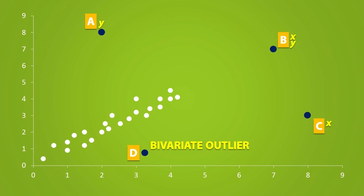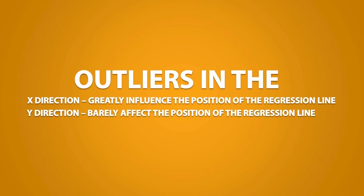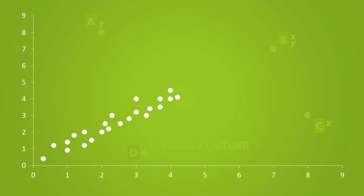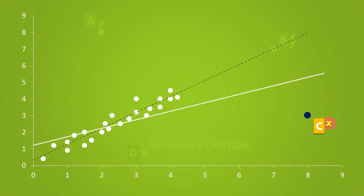The presence of outliers usually has an effect on the position of a regression line. Outliers in the X direction greatly influence the position of the regression line, whereas outliers in the Y direction barely affect it. So without the presence of outliers, the regression line would look something like this. If I include point A and recalculate the regression line, the new regression line would only slightly shift from the original — there is only a small change when we include outliers in the Y direction. Point C is an outlier in the X direction, and if I include it and determine the new regression line, we see that the position of the regression line drastically changes.